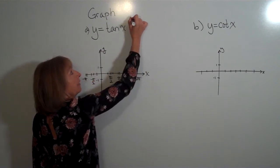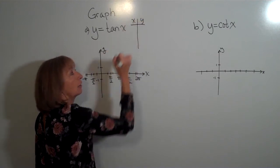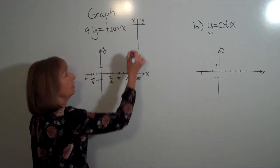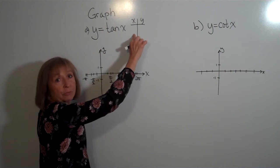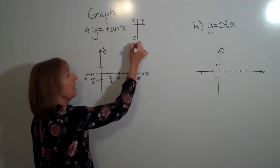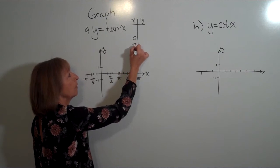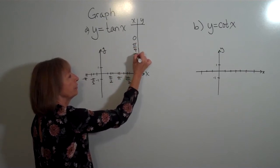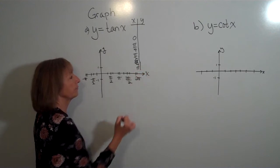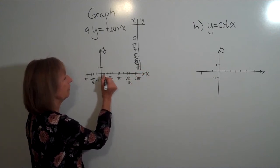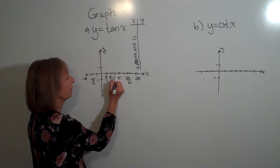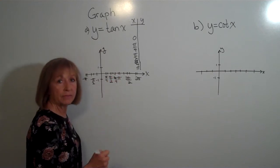Now let's make a table of values where our input is our angle and our output is the tangent of that angle. We'll start with angle values of 0, pi over 4, pi over 2, 3 pi over 4, and then pi. Pi over 4 is halfway between 0 and pi over 2, and 3 pi over 4 is halfway between pi over 2 and pi.